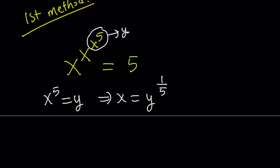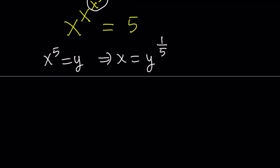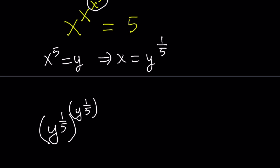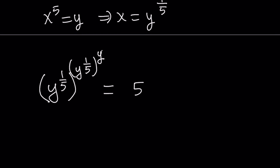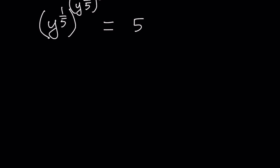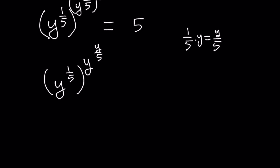After that, I'm going to manipulate a little bit. Replace x with y to the power 1 over 5, and then raise it to the power y to the power 1 fifth, which was raised to the power y — that is x to the fifth power, which is why I replaced it with y. This equals 5. Now I have y to the power 1 fifth twice, but there's an extra y. Since this is a power of a power, let's multiply those two exponents. That gives us y to the power 1 over 5, to the power y over 5 — because 1 over 5 times y is y over 5, which becomes the new exponent. And that equals 5.